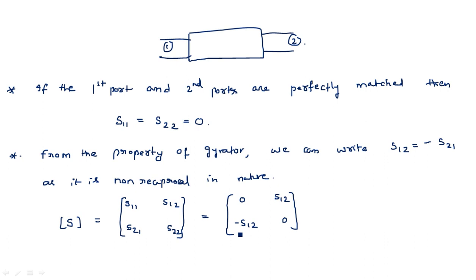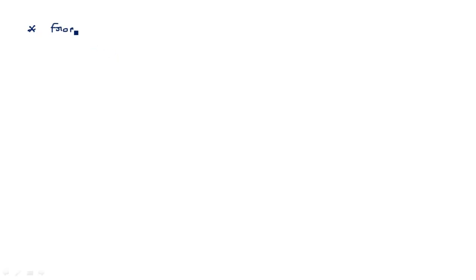Let us calculate the value of S12 by using another important property of the S-matrix: it is a unitary matrix. From the unitary property of the S-matrix, S multiplied by S-conjugate equals the identity matrix I.